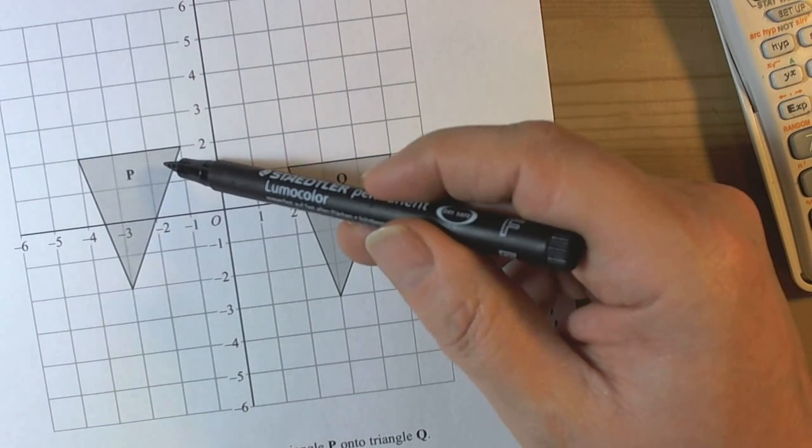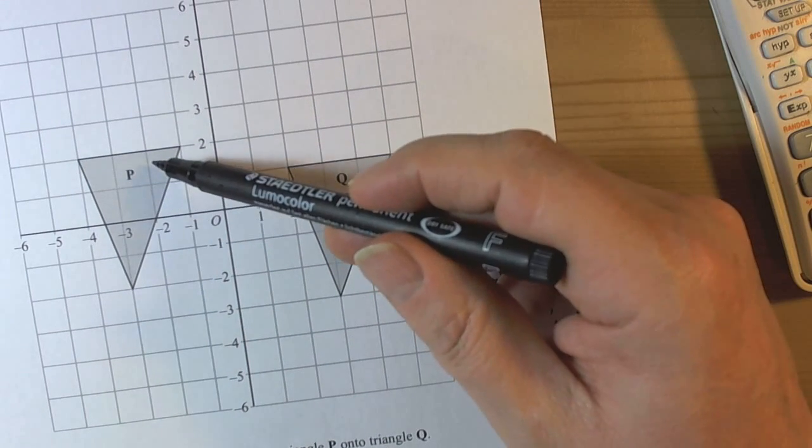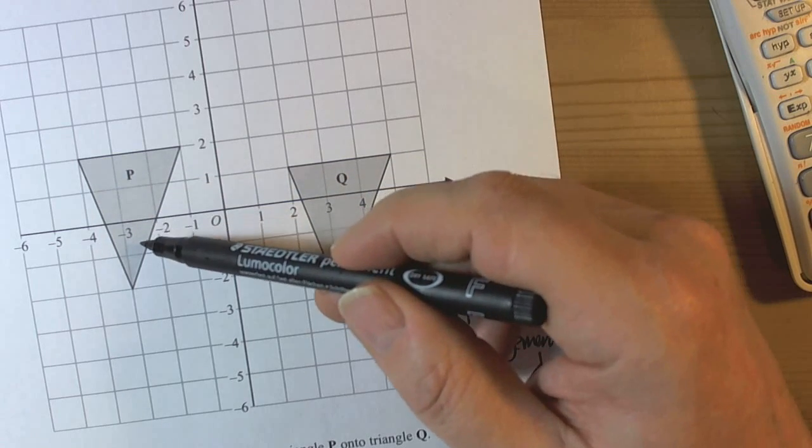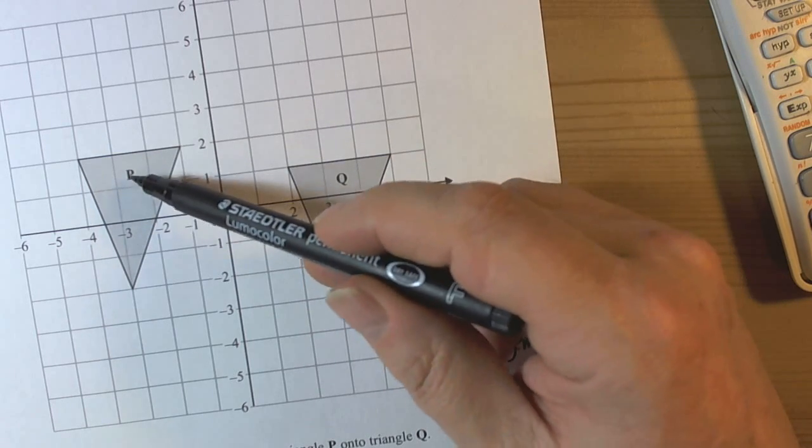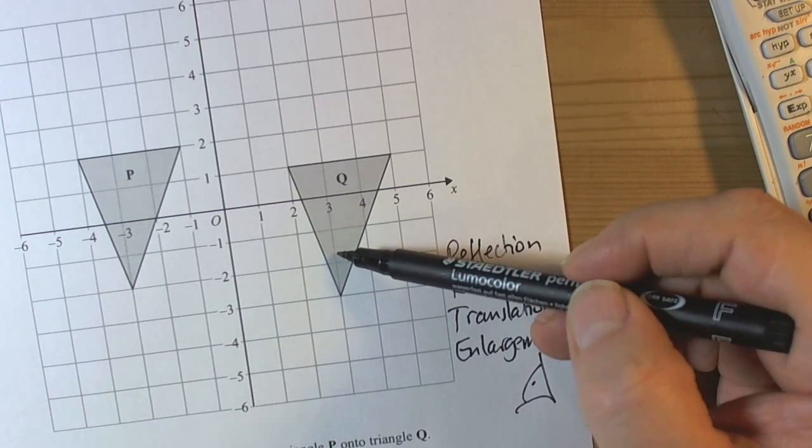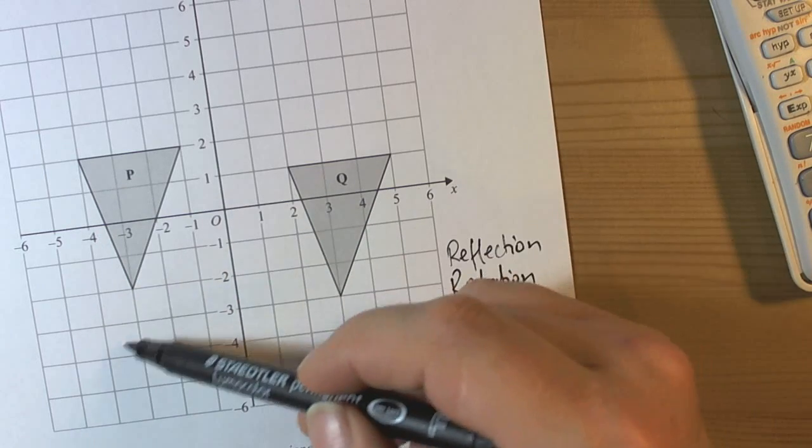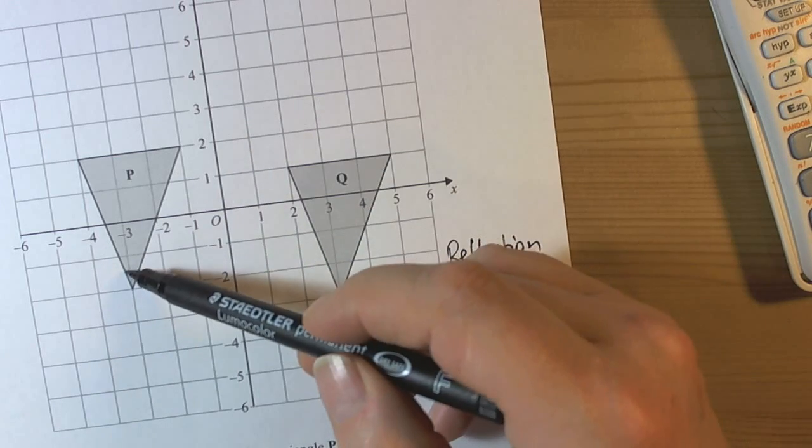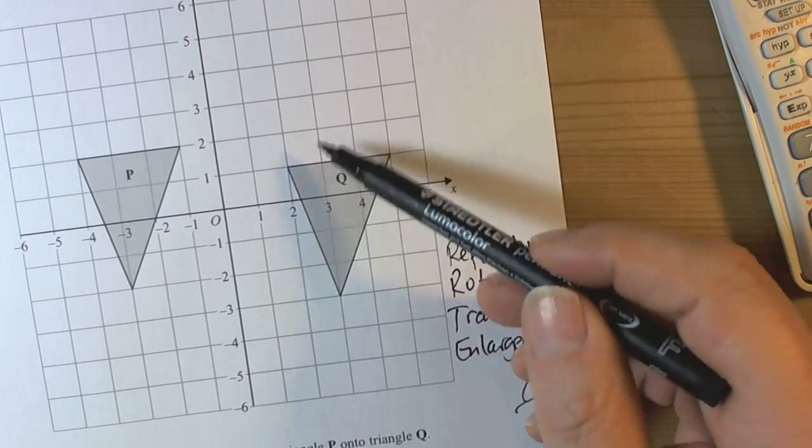Reflection. If we've got some tracing paper we can see that it's not going to be reflection, because if it went over the x-axis then this bit would go over there. If it went over the y-axis then this bit would be over here. And if it went through a line that's an angle then this would be over here somewhere. So it's not going to be reflection.